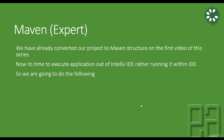We are going to do the following things. First, we are going to download Maven from the website and then set the home path for Maven so that you can execute it from the command prompt anywhere. And then we are going to run Maven against the project we are building right now, which is the Cucumber Basic project.